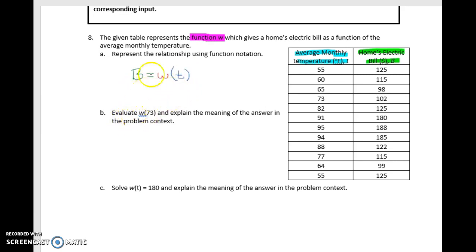And now when we evaluate, and evaluate if you look above, evaluate means that we know the input variable or the input quantity. And in this case, I know that my input is 73, and so I look over here in 73, so then I know my output is going to be 102. And so when I write my solution, I can say a couple different things.